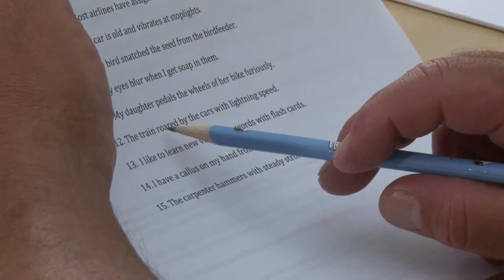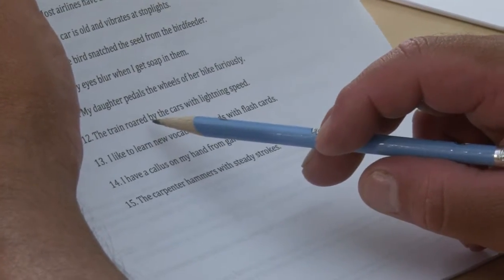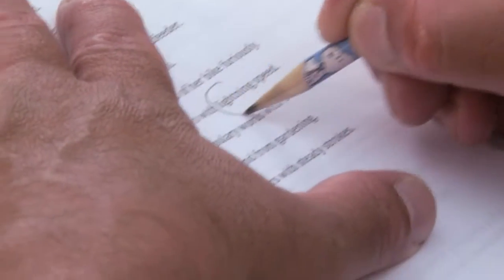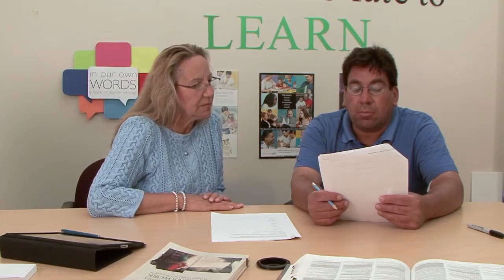The train roared by the cars with lightning speed. So what's the word in that sentence? Lightning. What does it mean when it says the train roared by the cars with lightning speed? It went past so quickly that it was like a blur. Perfect. Absolutely.